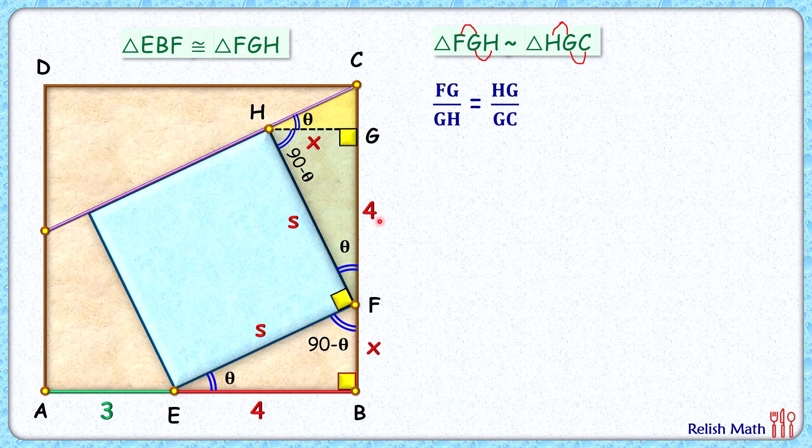FG, that is 4 centimeters, GH is x, HG length is again x. GC we are interested to find. Solving it will get GC length as x squared by 4. So this length GC is x squared by 4.